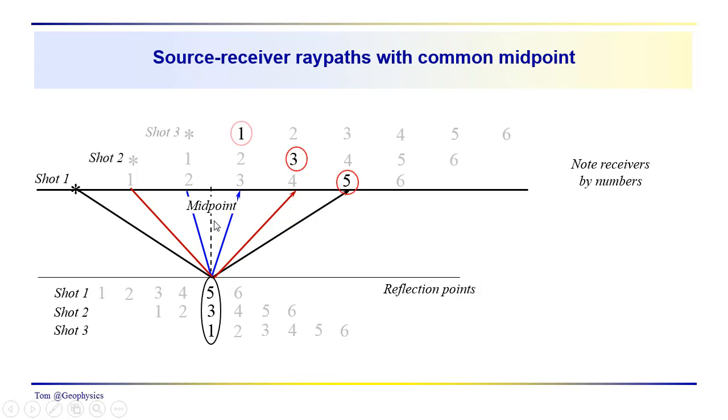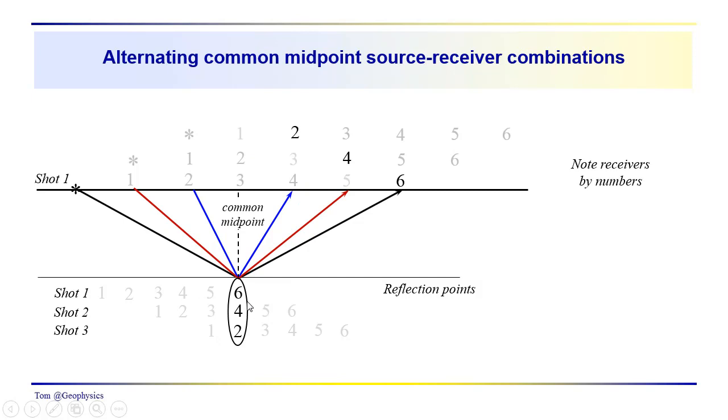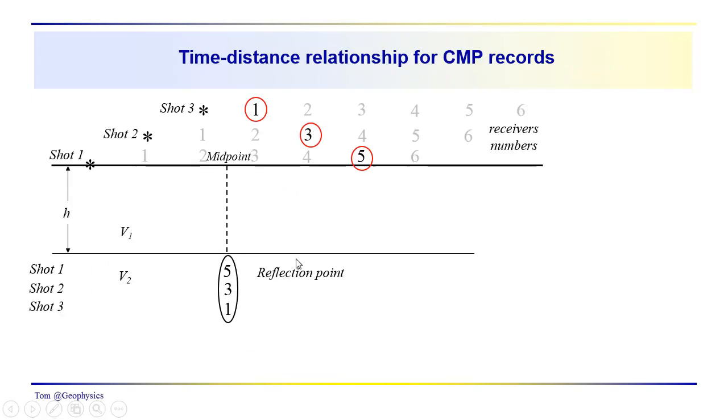So again we have these traces, five, three, and one from recordings, five with shot one, receiver three with shot two, and receiver one with shot three. And then this would be the other combination that we also showed in this sequence here with recordings from this common midpoint to receiver six from shot one, four from shot two, and two from shot three. So we're just kind of alternating recordings from this combination of receivers to this combination of receivers and back and forth along the line.